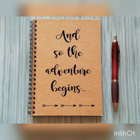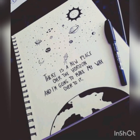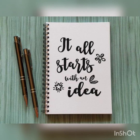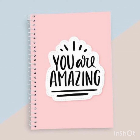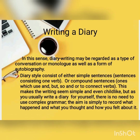The last topic for today is writing a diary. A diary is a personal record of events, experiences, thoughts, and observations — a person's account of themselves to themselves. Diary writing may be regarded as a type of conversation or monologue as well as a form of autobiography. Diary style consists of simple or compound sentences, which may seem childlike, but as you usually write a diary for yourself, there is no need for complex grammar. The aim is simply to record what happened, what you thought, and how you felt.